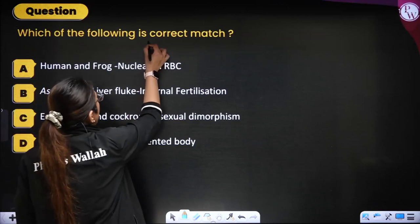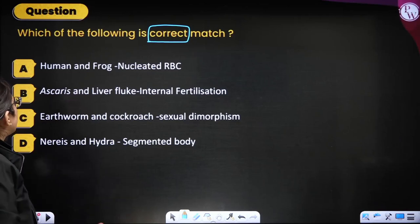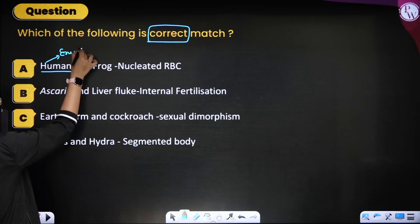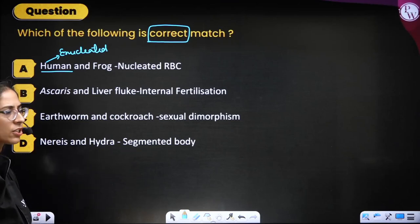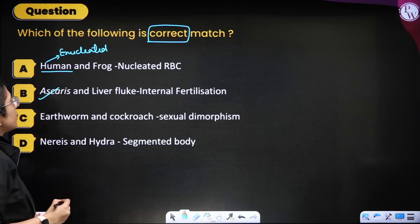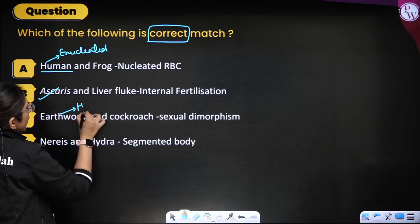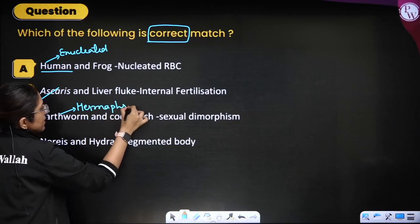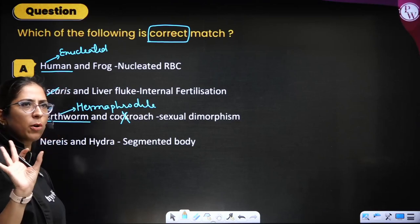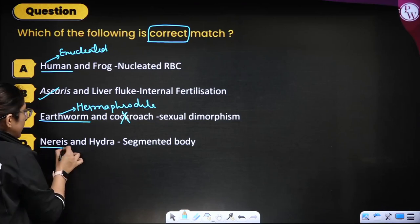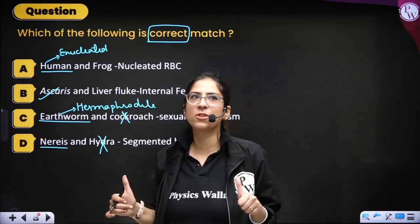Next question: which of the following is the correct match? Humans and frogs — saying both have nucleated RBC: No, humans have enucleated RBC; frogs have nucleated RBC. Ascaris and liver fluke showing internal fertilization — Yes, this is right. Earthworm and cockroach showing sexual dimorphism — earthworms are hermaphrodite, so this cannot be correct (though cockroach does show sexual dimorphism). Nereis and Hydra having segmented bodies — Hydra has no segmented body. Correct option is B.